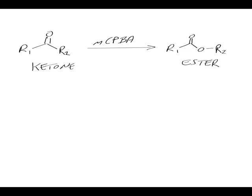We're just going to talk about the Baeyer-Villiger reaction here, where basically you take a ketone and you oxidise it to an ester using a peracid such as MCPBA. So I'll just write the name of this up here — this is Baeyer-Villiger.